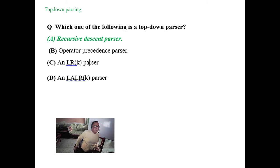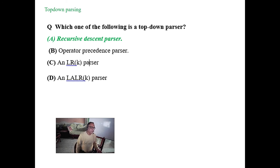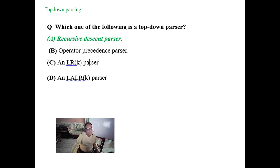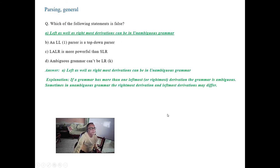For any recursive descent parser, if the grammar is unambiguous, any recursive descent parser can handle it, but there may be some backtracking. It is essentially top-down — we start from S and take a depth-first tree traversal going forward; if something does not match, we backtrack. That is called backtracking. If we take LL(1) grammar, no backtracking is guaranteed. Which of the following statements is false? Left as well as rightmost derivation can be unambiguous — that is false.